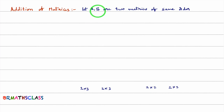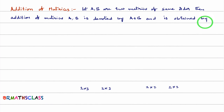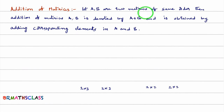So, consider A and B are two matrices of same order. Then, addition of matrices A and B is denoted by A plus B, and is obtained by adding corresponding elements in A and B. If A and B are of different order, then addition of matrices is not defined.